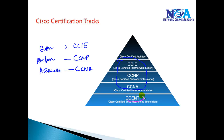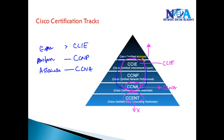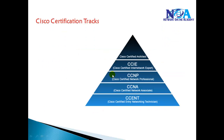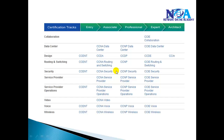There are also some entry-level certifications, but these are less commonly pursued. People who want to start a career in Cisco networking typically start with CCNA. The highest common level is CCIE, and above that there is an architect-level certification, but that is quite rare. Majorly, most people go with CCNA, CCNP, and CCIE certifications.